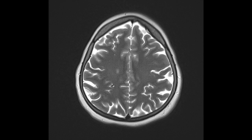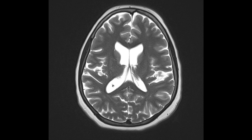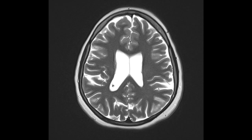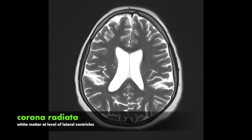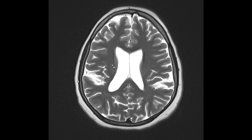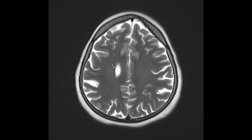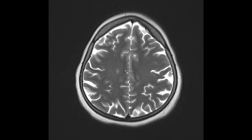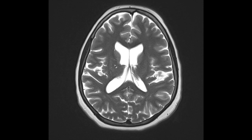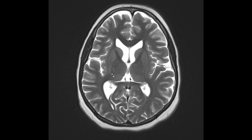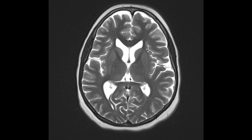Coming further down to the level of the lateral ventricles, at this level you have the deep white matter known as the corona radiata. If you go more dorsal to that you see the centrum semiovale. Coming back down to the level of the corona radiata and going further down, you'll see that it becomes continuous with the internal capsule.